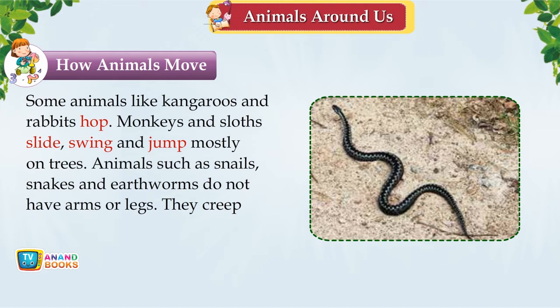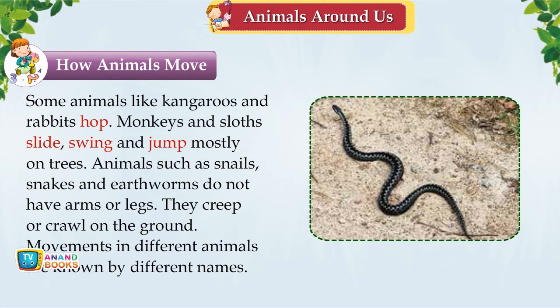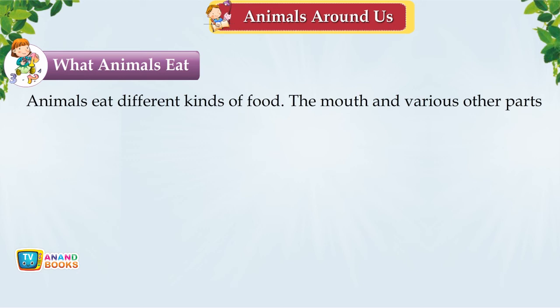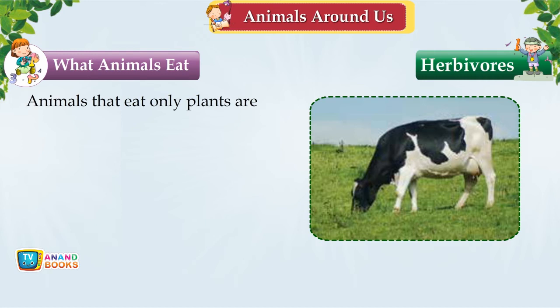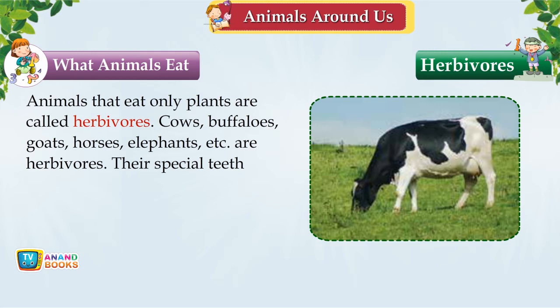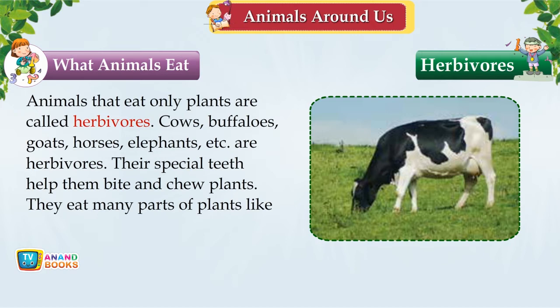What Animals Eat. Animals eat different kinds of food, and their mouths and body parts are suited to what they eat. Herbivores eat only plants — cows, buffaloes, goats, horses and elephants are herbivores. Their special teeth help them bite and chew plants, leaves, fruits, seeds, grains and nuts.